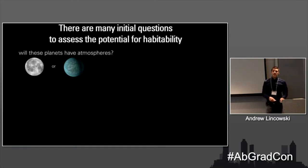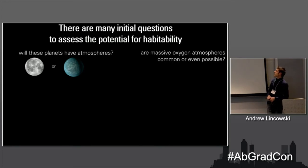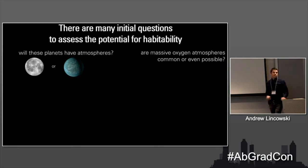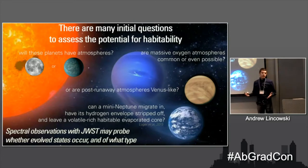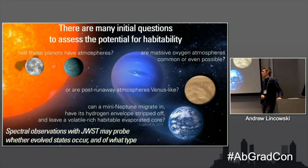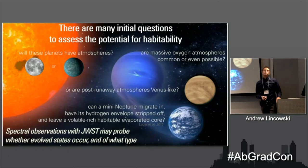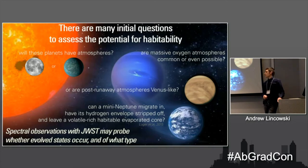So we need to ask: do these planets even have an atmosphere? Are these massive oxygen atmospheres — just theorized at this point — possible or common? Or do you get a more Venus-like planet — a post-runaway greenhouse — as perhaps the most common type? And perhaps the only way to get a habitable planet around an M-dwarf is a mini-Neptune, a hydrogen-rich volatile-rich planet that migrates in, strips off its hydrogen envelope, and leaves a habitable evaporated core, as proposed by Rodrigo Luger et al.